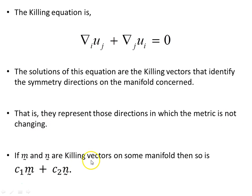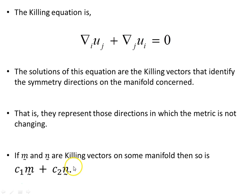If m and n are two Killing vectors on some manifold, then so is their linear combination. A linear combination of any Killing vectors is itself another Killing vector.